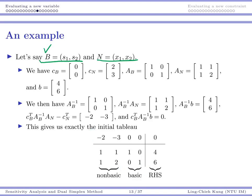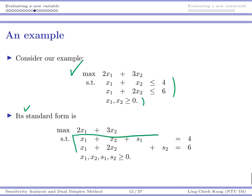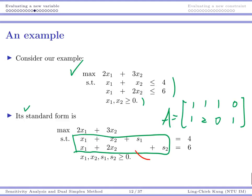With s1 and s2 as basic variables, cb is [0, 0] and cn is [2, 3]. The basic columns s1 and s2 have objective coefficients of zero, while the non-basic variables x1 and x2 have objective coefficients two and three. We collect these numbers into cb and cn according to the basic and non-basic sets. For Ab, since s1 and s2 are basic, the basic columns form the identity matrix.